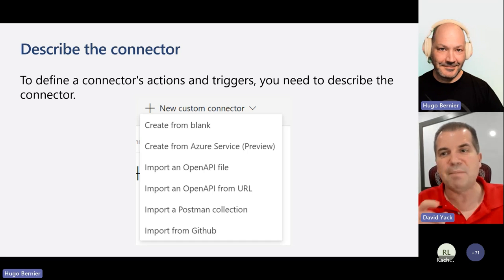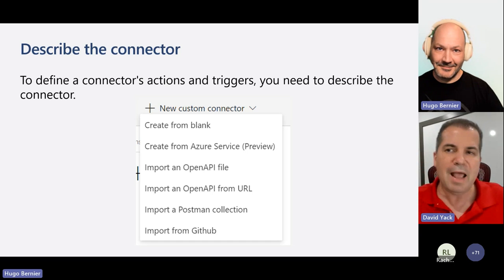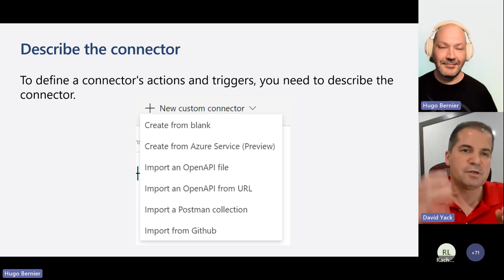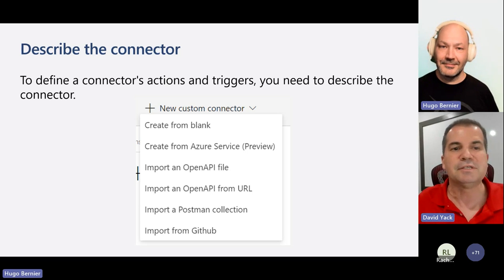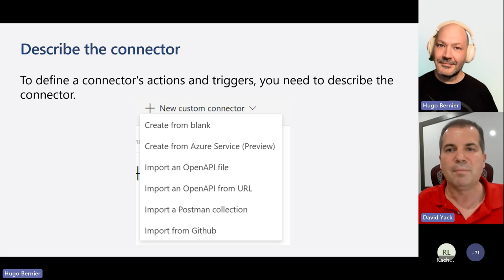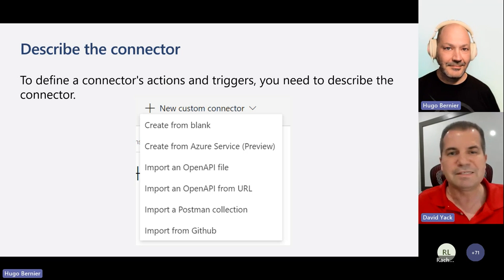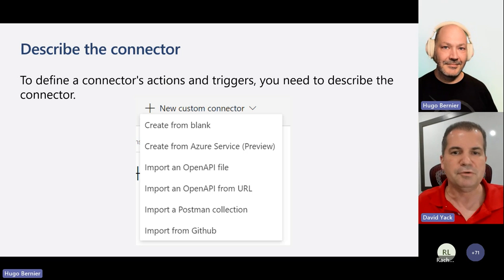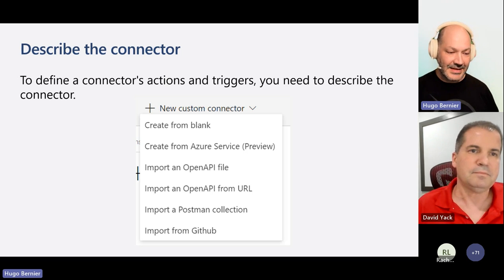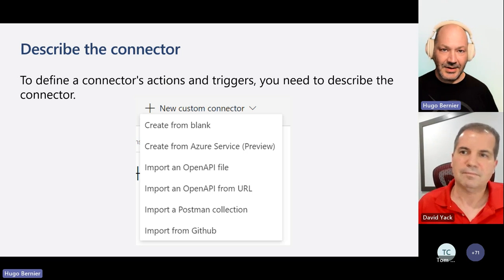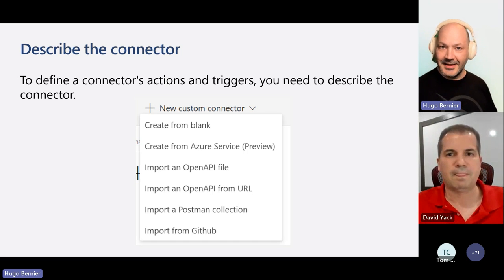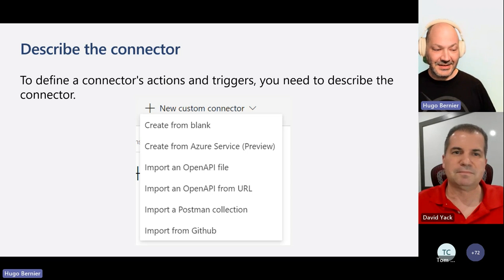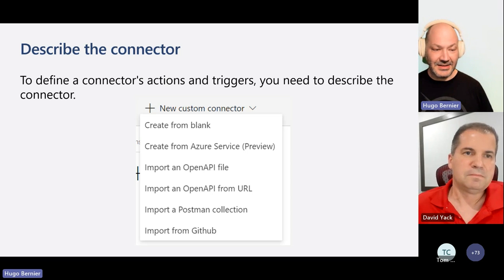Another option: take the Vimeo example where some actions existed but not all. I wanted to add on to it but keep the existing definitions. I could import from GitHub, which lets me bring in the definition from an existing open source connector and make some tweaks for my own use. And I have to say that creating from the Azure service is one of my favorites — as the world's laziest developer, being able to just point to an Azure service and get the API is beautiful.